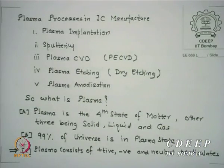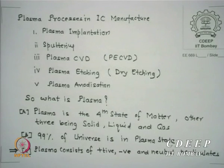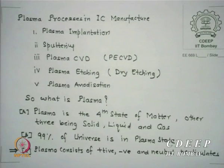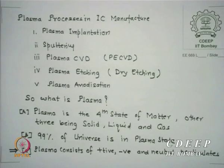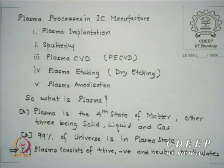The next possible process in IC manufacturing uses plasma. Looking at the list, plasma processing in IC includes plasma implantation, sputtering (based on plasma process), plasma-enhanced CVD for depositing any material, dry etching using plasma with no liquid involved — both reactive and non-reactive — and oxidation of silicon using plasma.